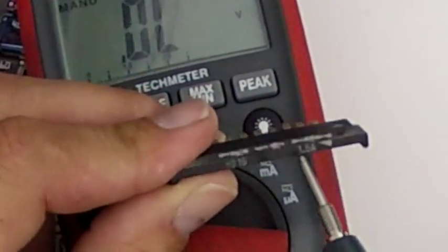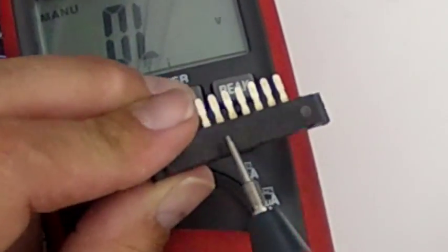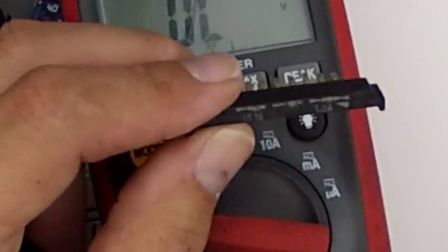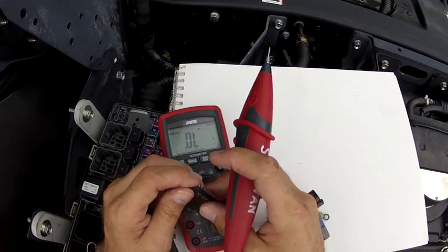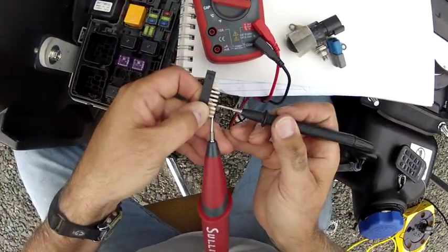So these terminals here are one diode, these terminals here are another diode, and these terminals here are a third diode. But just to prove a point, I should be able to put my probes here and here.